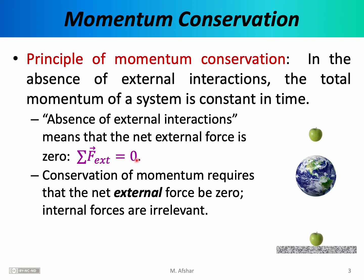Note that we are not saying there cannot be external forces — we're simply saying that the external forces must add up to zero. For example, if our system is this apple, certainly there are external forces acting on it. Planet Earth is pulling the apple down — that's the weight — and also the floor is pushing the apple up — that's the normal force. Both of those are external forces when we view the apple as our system, but they add up to zero, and therefore the apple is in the absence of external interactions, and its momentum is conserved.